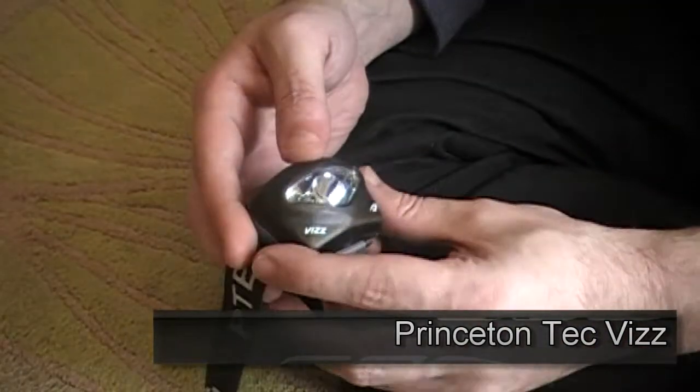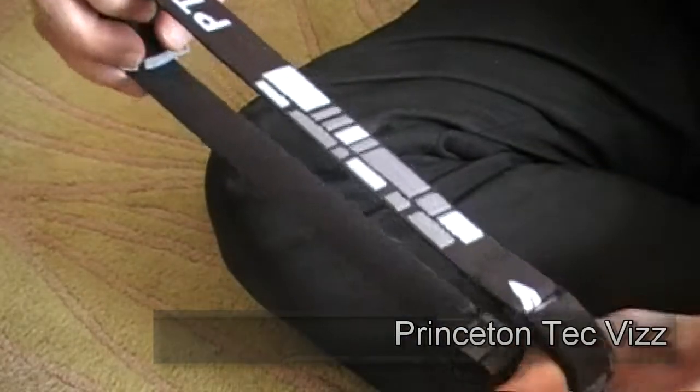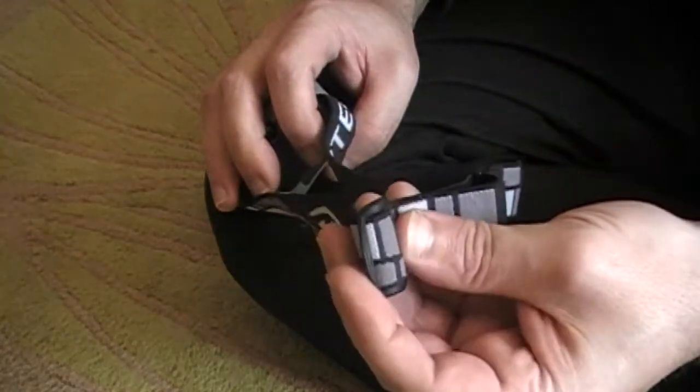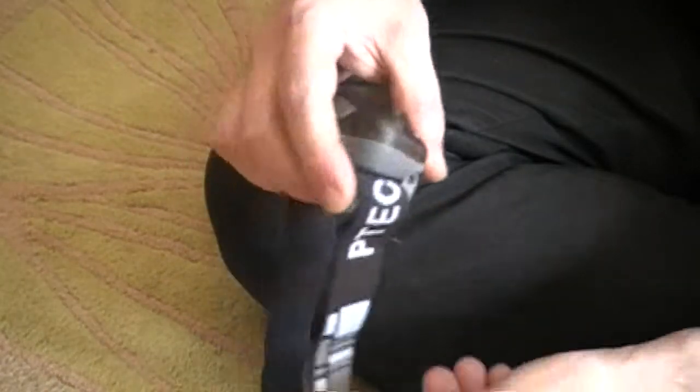Welcome to the Princeton Tech Viz headlamp. As you can see, it's just a standard type of headlamp with a rubber band that goes around your head. There is an adjustable strap here, so no matter how big your head is, you shouldn't have any problems getting this around your noggin.